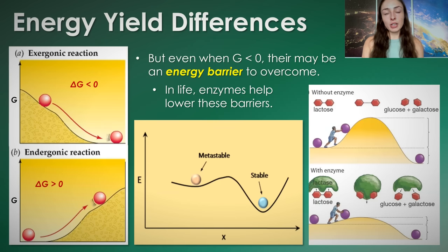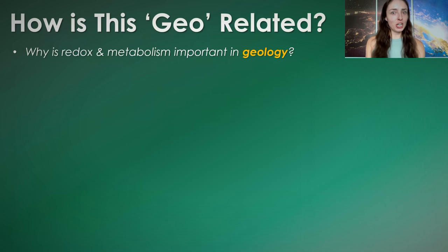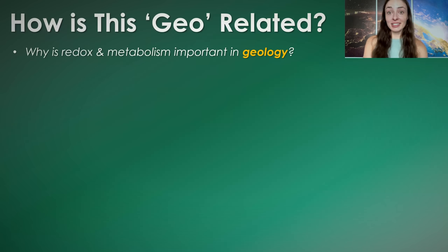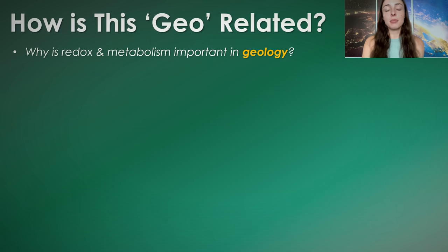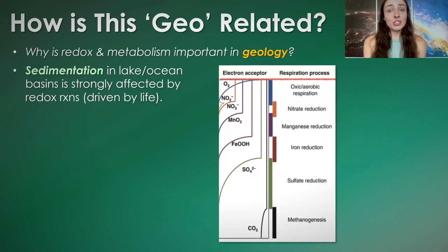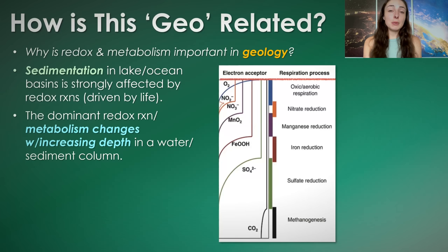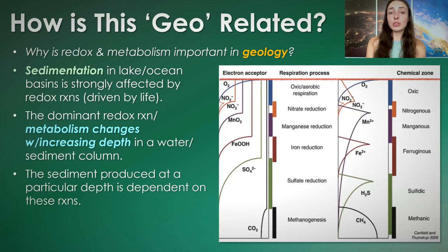So what does any of this have to do with geology? I'm a geoscientist, and the reason I learned about the redox tower was purely for geoscience — for understanding rocks and how sedimentation works. The dominant redox reaction or metabolic pathway of life in a given region changes drastically with depth, and the sediment produced at any particular depth is dependent on the redox reactions occurring there. In a ferruginous zone you get iron-rich sediment; in a sulfidic zone you get sulfide-rich sediment, and so on.